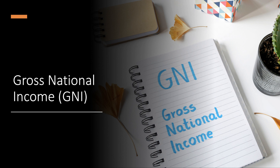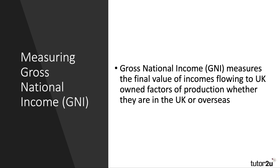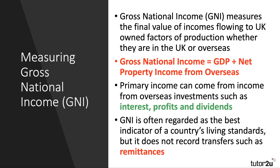Another measure you need to be aware of for most exam boards is gross national income, or GNI. GNI measures the final value of incomes flowing to UK-owned factors of production, regardless of whether they're in the UK or overseas. GNI equals GDP plus net property income from abroad — that is, primary income from things like interest on savings, profits of companies located overseas, dividends, and rental income. GNI is now widely regarded as the best indicator of a country's living standards.